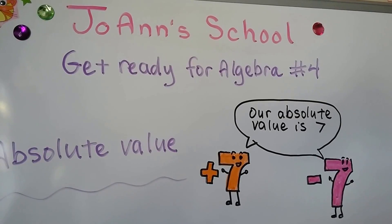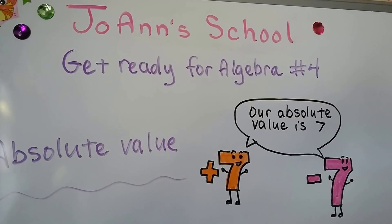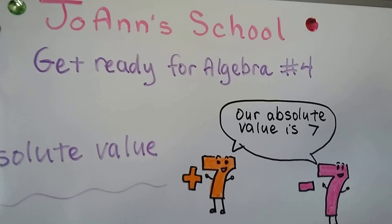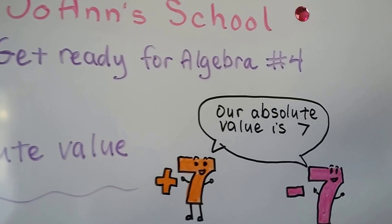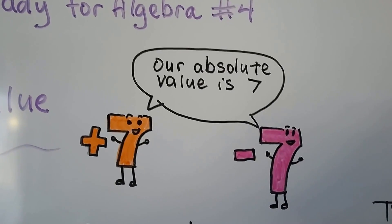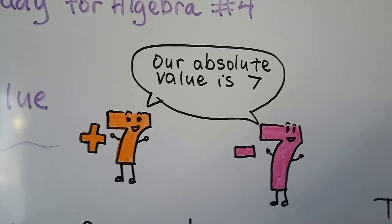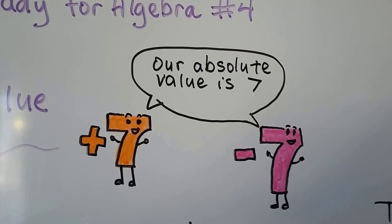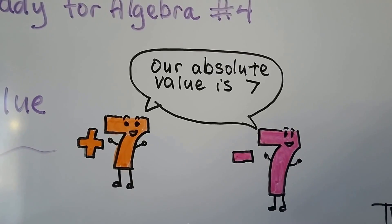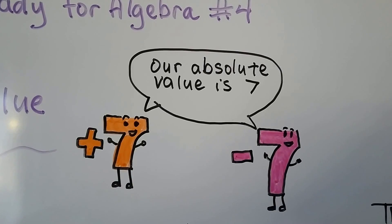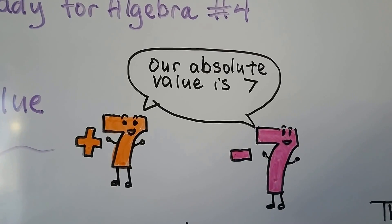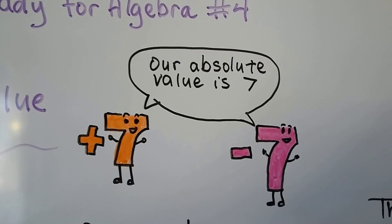Getting ready for algebra number four: absolute value. The absolute value of a number is how far away it is from zero. So if it's a positive seven or a negative seven, their absolute value is seven because that's how far away they are from zero.